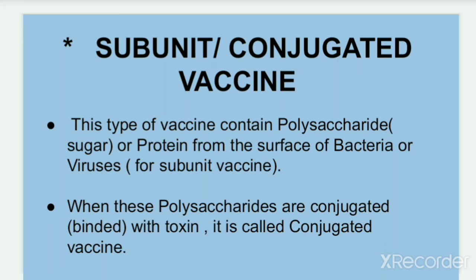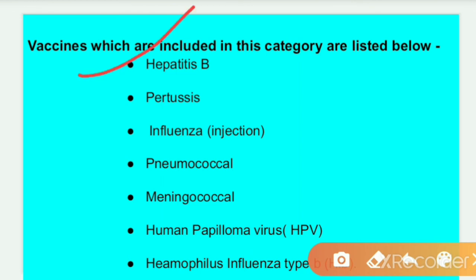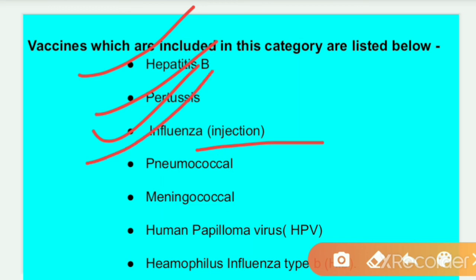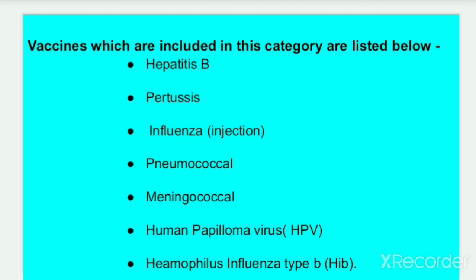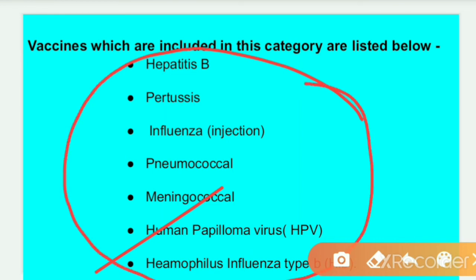In the conjugated vaccine, the protein on the surface of the bacteria or virus is conjugated with a toxin. Examples in the subunit or conjugated vaccine category include: Hepatitis B, polysaccharide influenza (injection), Pneumococcal (against pneumonia), Meningococcal (against meningitis), Human Papillomavirus (HPV), and Haemophilus influenzae type b (Hib).